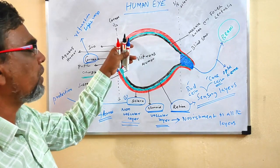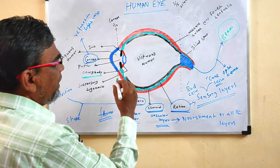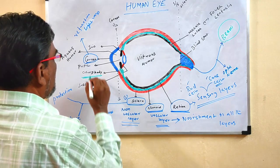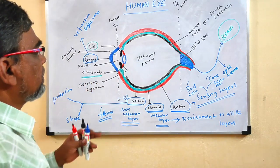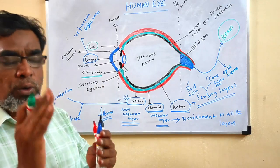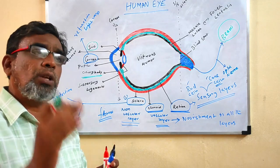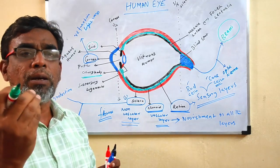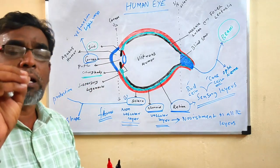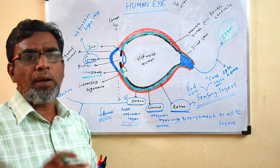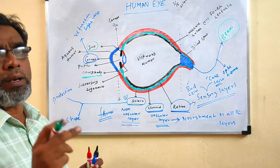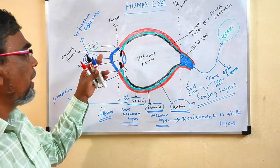From the ciliary body, another structure arises — the black structure called the iris. This iris helps to adjust the light rays entering the eye. One more function of the iris: it gives color to the eye. Our eye appears black or brown because the iris has a color pigment. If it is a black pigment, your eye is black; if it is a brown pigment, your eye is brown.